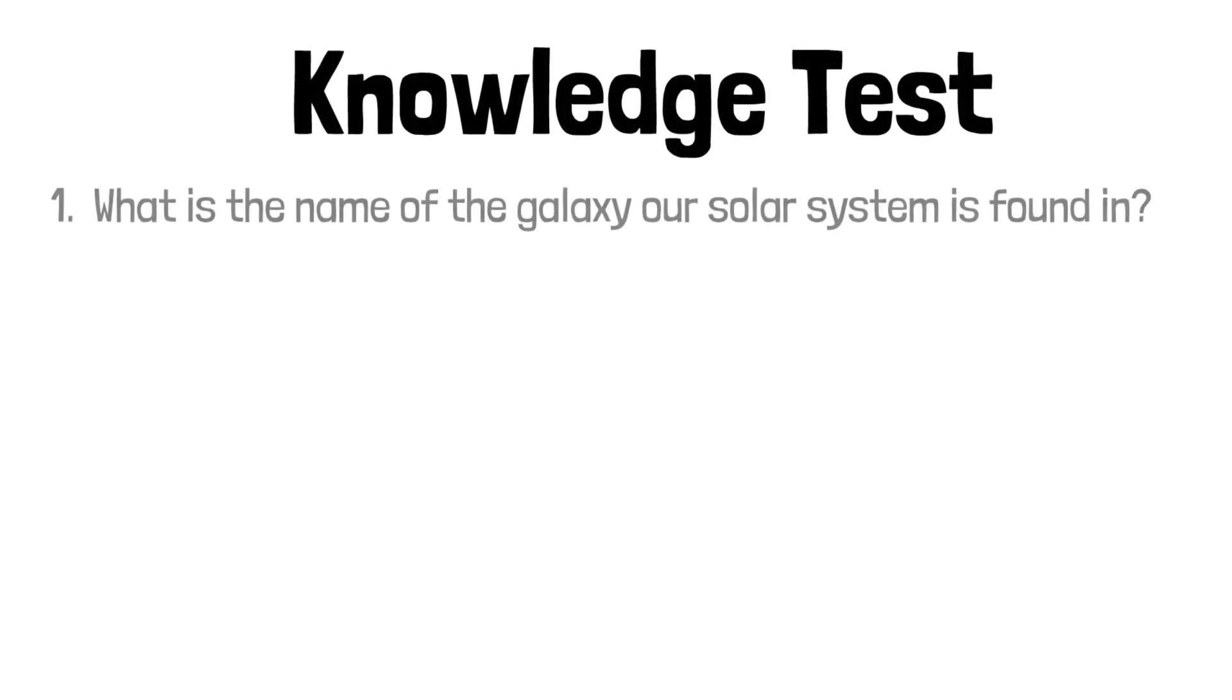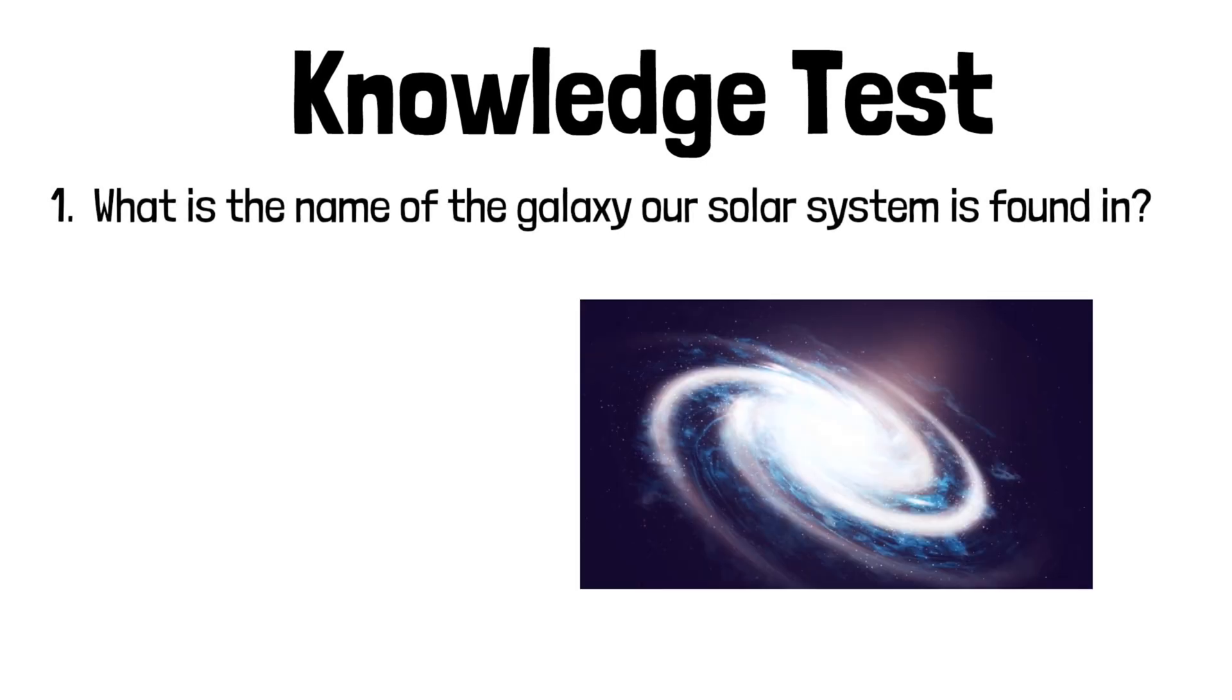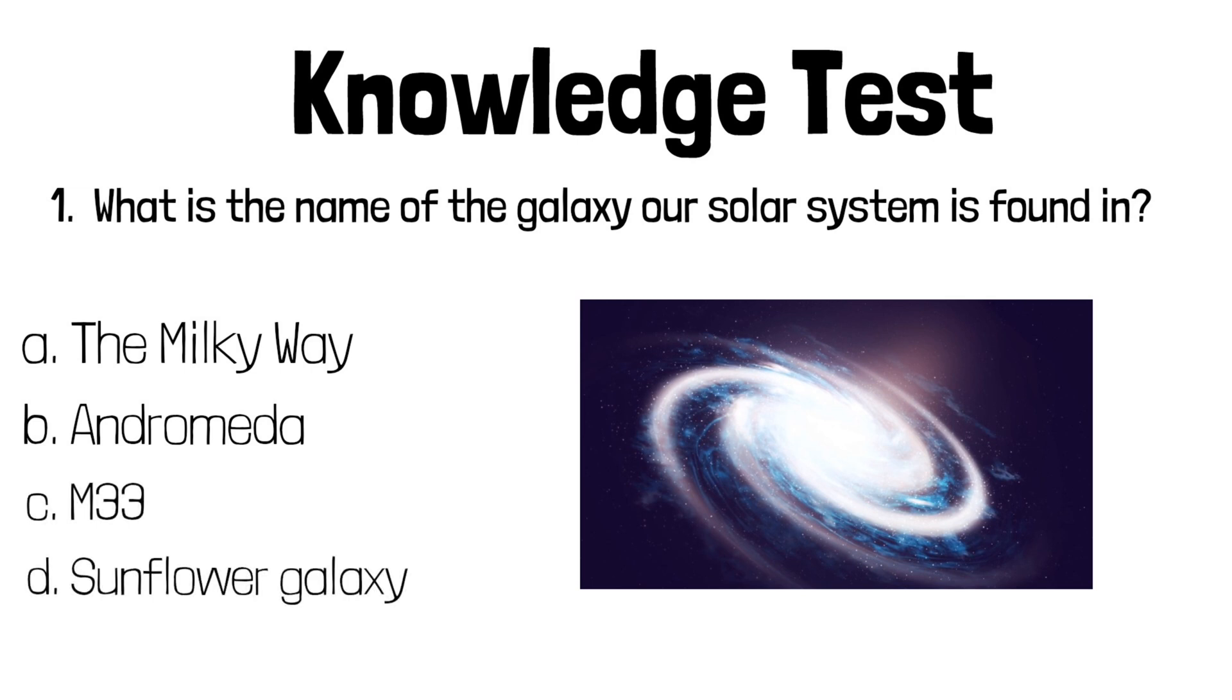We now have a short multiple choice quiz testing how much knowledge you have gained from this video. You have several responses that you can choose from and 10 seconds. Question 1: What is the name of the galaxy our solar system is found in? Is it A the Milky Way, B Andromeda, C M 33 or D the Sunflower Galaxy? The correct answer is A the Milky Way.